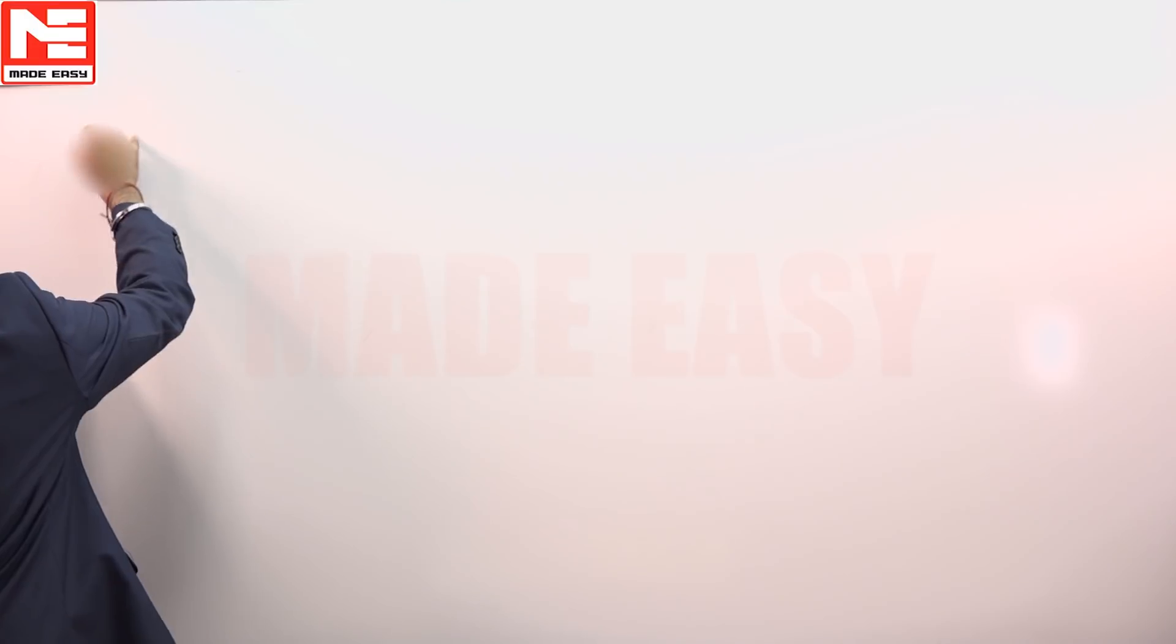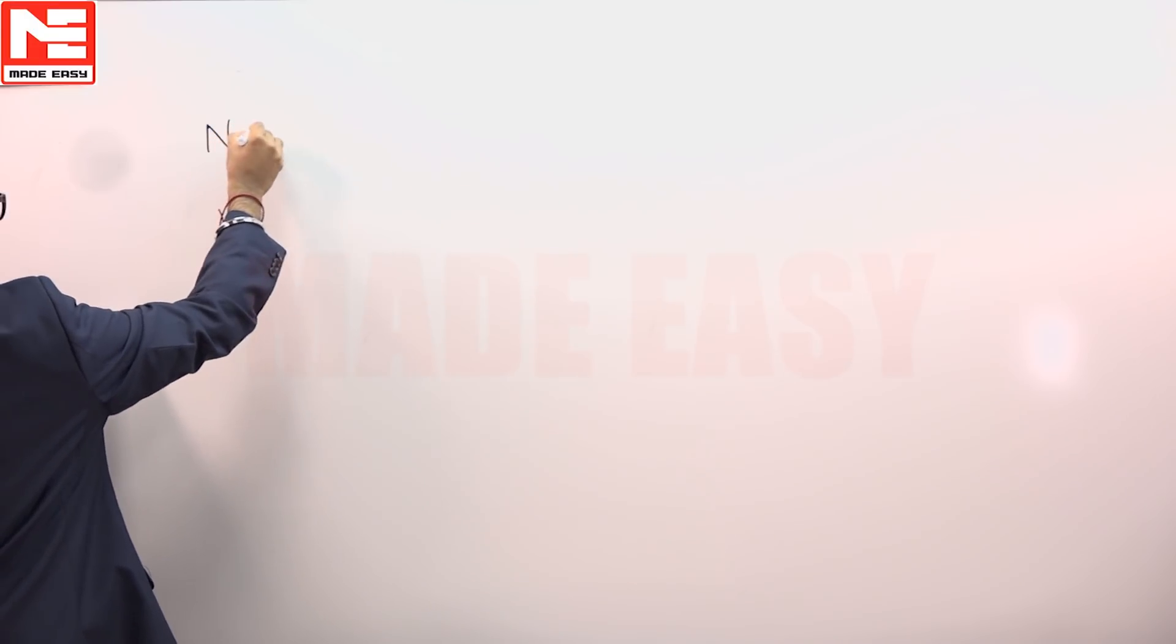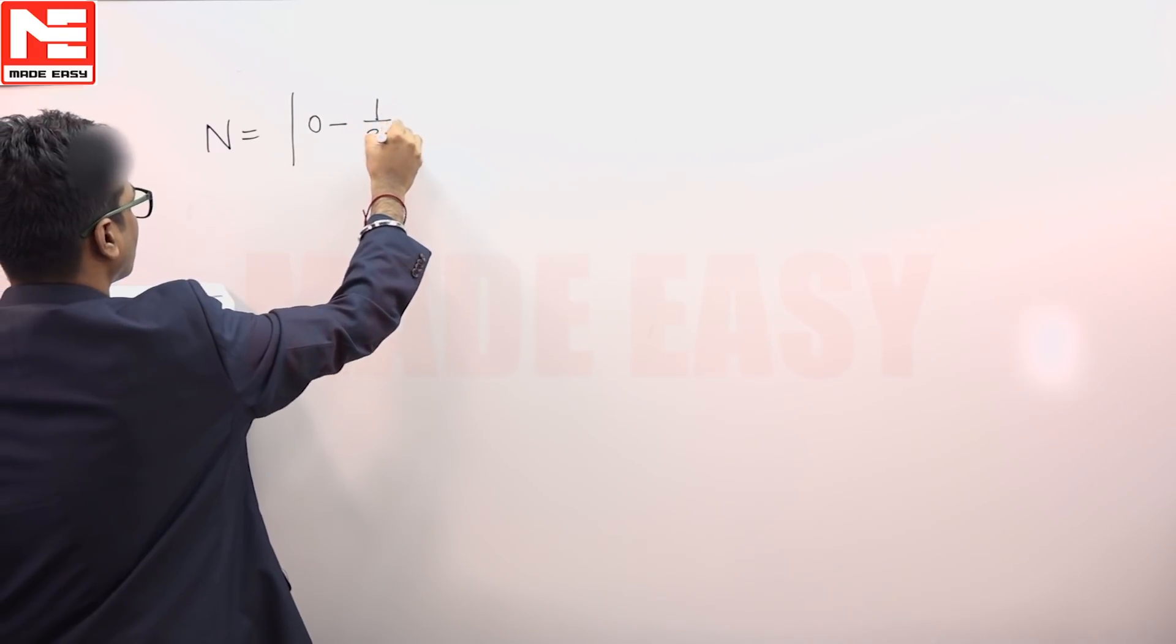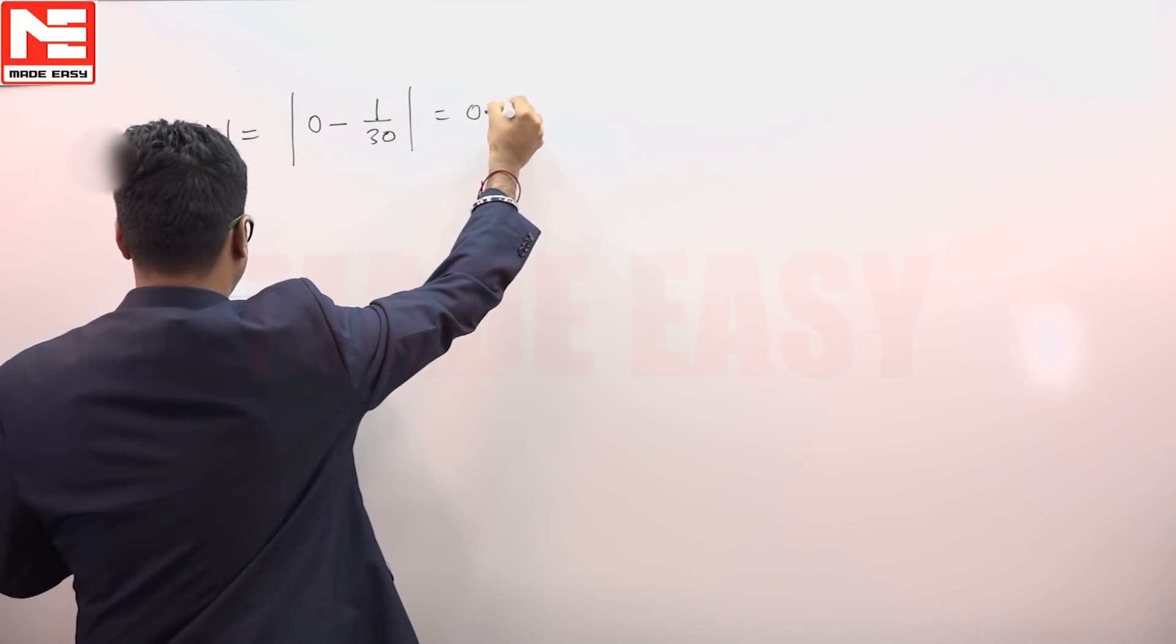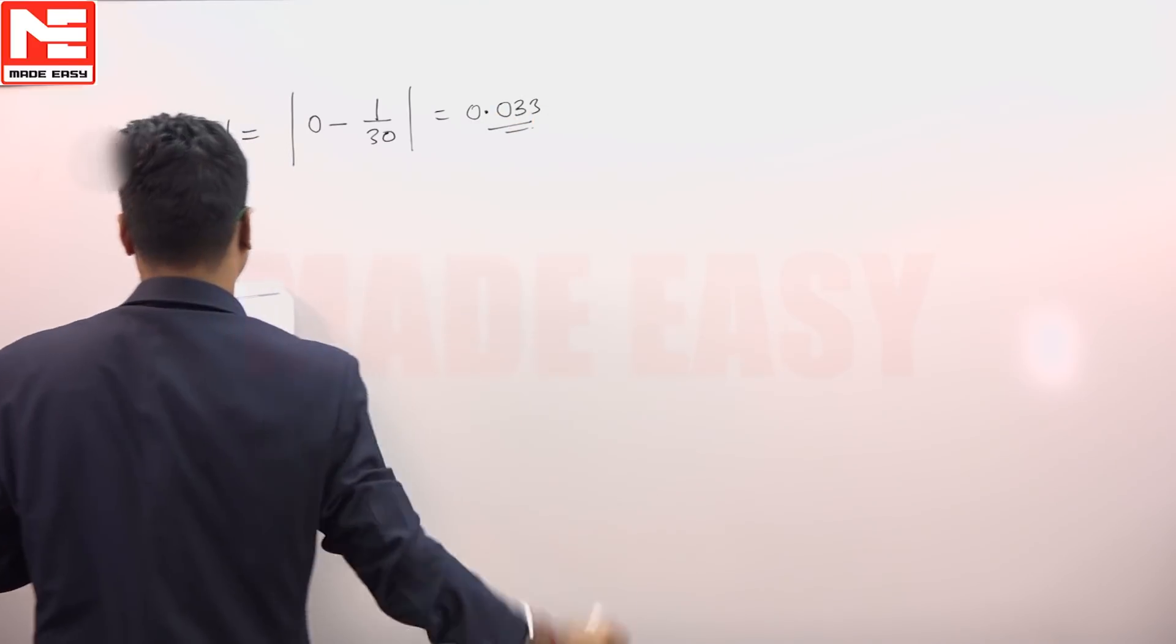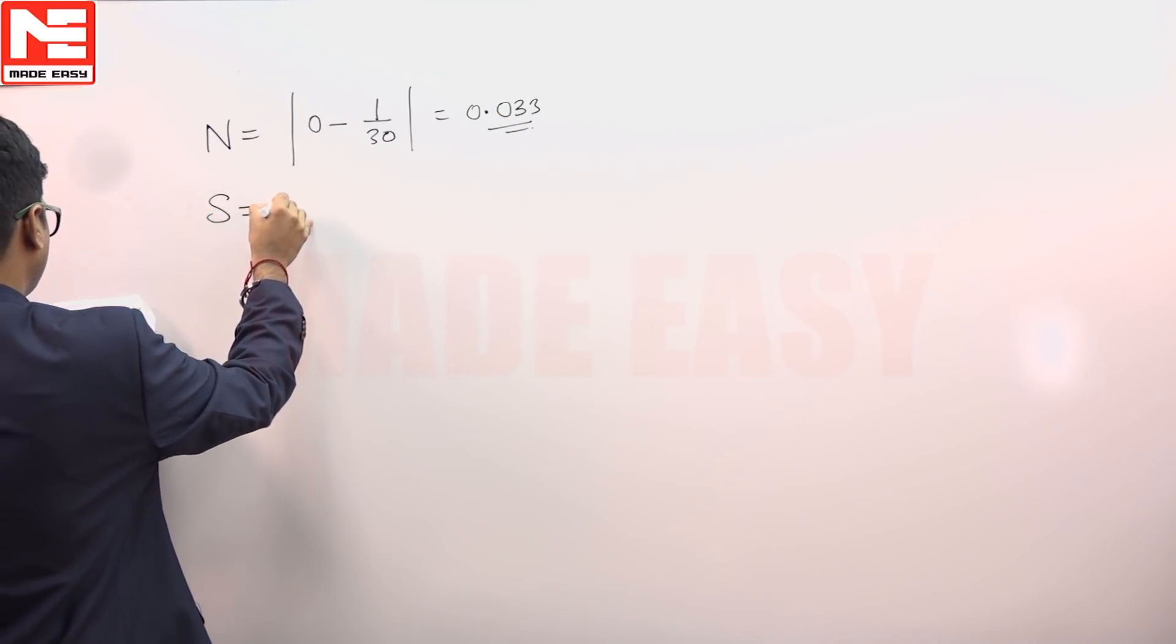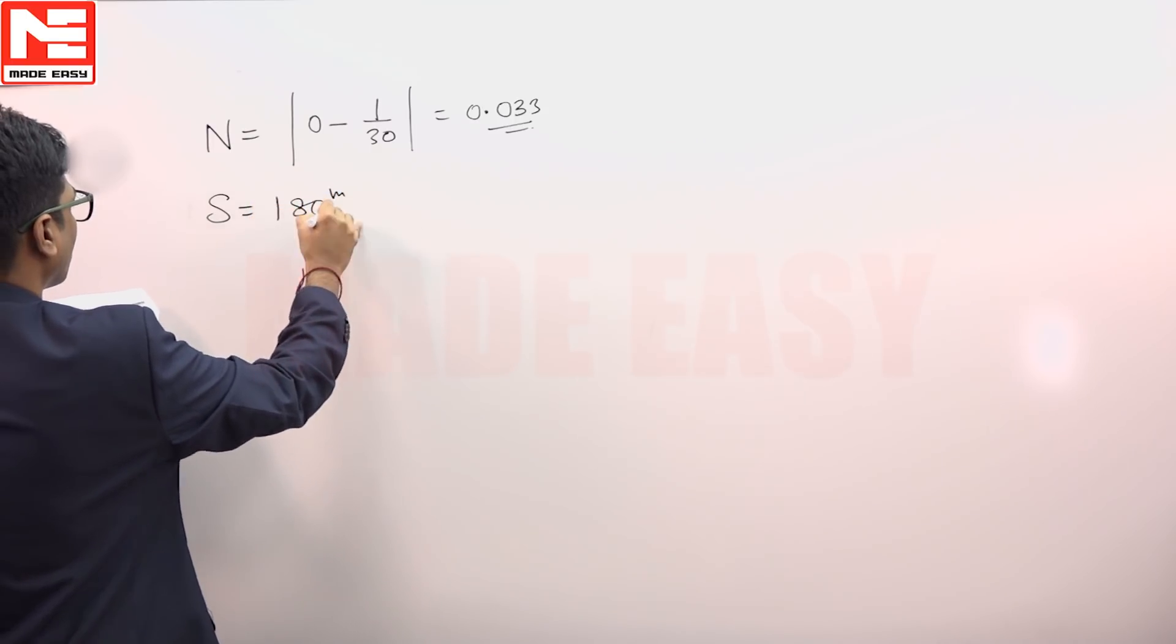So this capital N is equal to minus 1 upon 30, which is 0.033. Now this capital S, which is stopping sight distance, is already given as 180 meters.